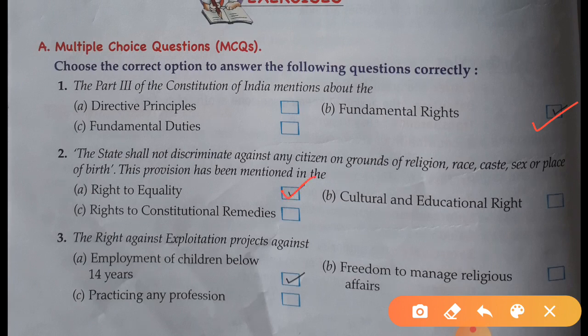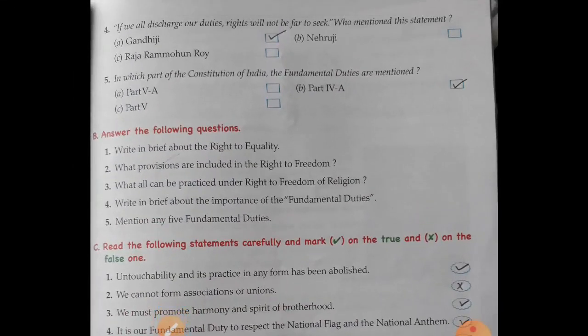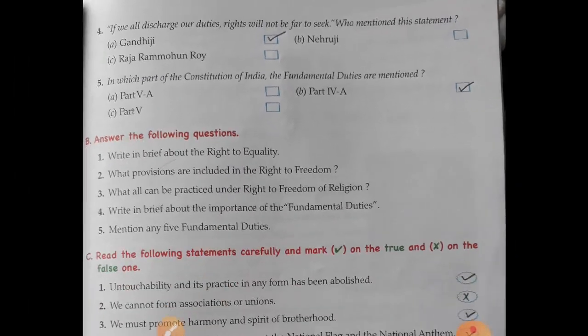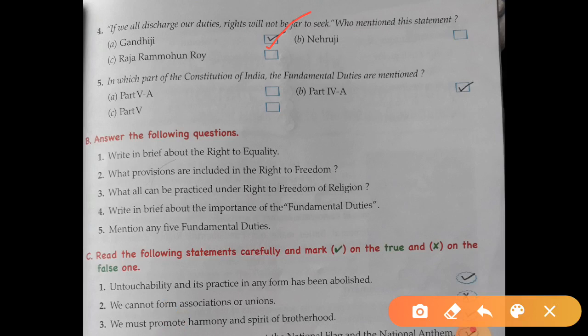Next: the right against exploitation protects against employment of children below 14 years. Now come on next page. If we all discharge our duties, rights will not be far to seek — who mentioned this statement? Gandhiji. Then, in which part of the constitution of India are the fundamental duties mentioned? Part 4th, option A — here you have to take.